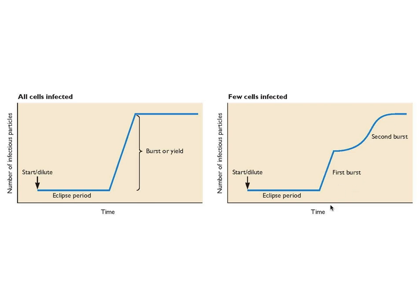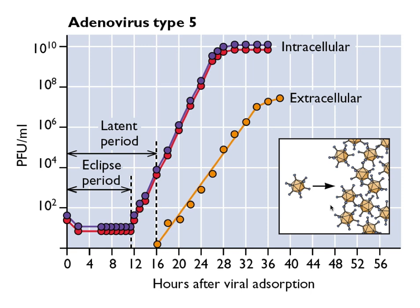This technique was subsequently adapted to animal virus-infected cells. This is a growth cycle of adenovirus in a mammalian cell culture. Adenovirus is a rather large DNA-containing virus. Again, you infect cells, allow virus to adsorb, dilute the culture, take samples at different hours, measure plaque-forming units per milliliter, and again you see an eclipse period where you can't detect any viral infectivity.